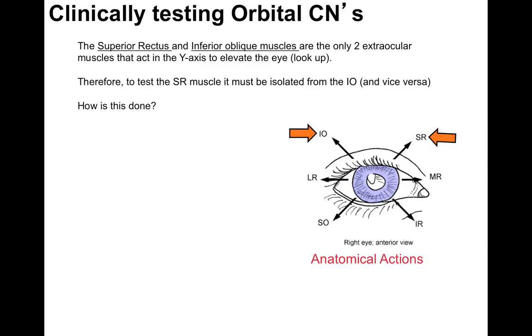The superior rectus and inferior oblique muscles are the only two extraocular muscles that act in the y-axis to elevate the eye and look up. Therefore, to test the superior rectus muscle, it must be isolated from the inferior oblique and vice versa.